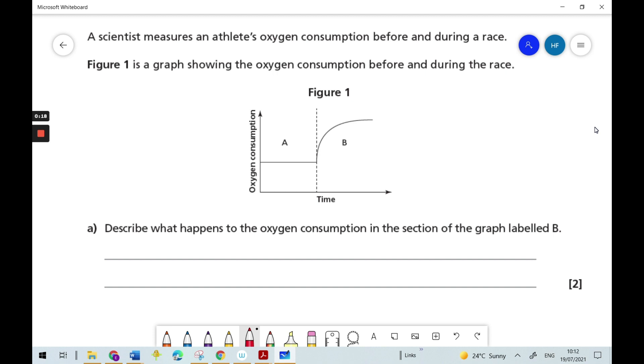Part A says, describe what happens to the oxygen consumption in the section of the graph labeled B, and that's two marks. So let's begin by identifying the command word in this question. I can see it here at the beginning of the sentence for the question: describe.